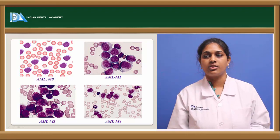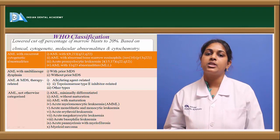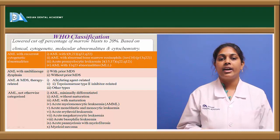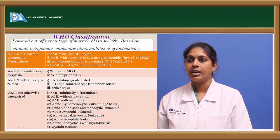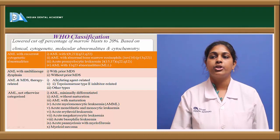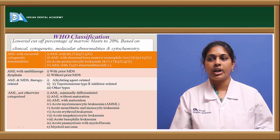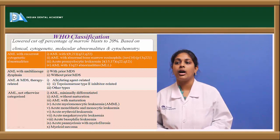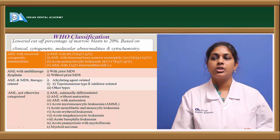The WHO classification differs from the FAB classification in that it requires at least 20% blasts rather than 30%. While cytochemistry is considered, WHO also incorporates clinical, cytogenetic, and molecular abnormalities. The first group in WHO classification is AML with recurrent cytogenetic abnormalities, including AML with t(8;21)(q22;q22), AML with abnormal bone marrow eosinophils showing chromosomal inversion, and acute promyelocytic leukemia showing translocation.